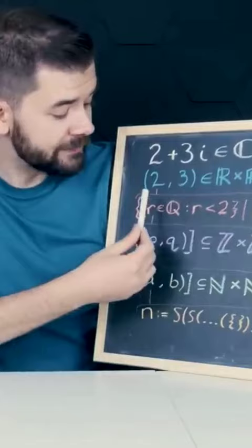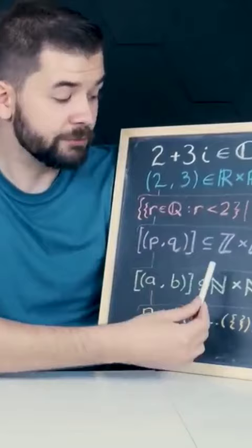Where each rational number is a collection of ordered pairs of integers related by division, where each integer is a collection of ordered pairs of natural numbers related by subtraction, where each natural number is constructed by recursively taking the successor of the empty set. Easy.